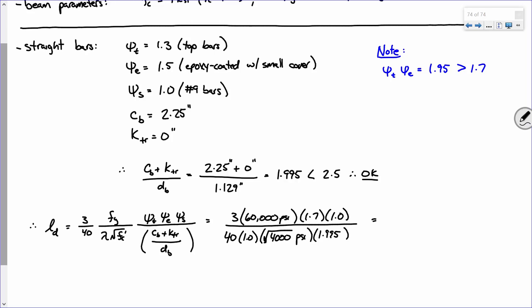First thing we need to compute is this ratio. Plug and chug, and that'll come out to 1.995. Is that an acceptable value? Because it has to be less than 2.5. So, our development length is 3 over 40, then we have lambda square root of FC prime, then Fy, and then we have psi T, psi E, psi S, over our ratio. What should that be? 68.3. Is that what anybody else got?